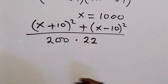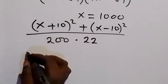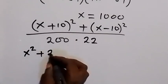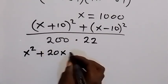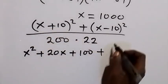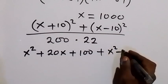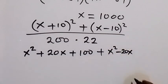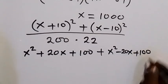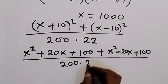Next, we expand the numerator. Expanding (x + 10)² gives x² + 20x + 100. Expanding (x − 10)² gives x² − 20x + 100. The full numerator is x² + 20x + 100 + x² − 20x + 100, all divided by 200 times 22.